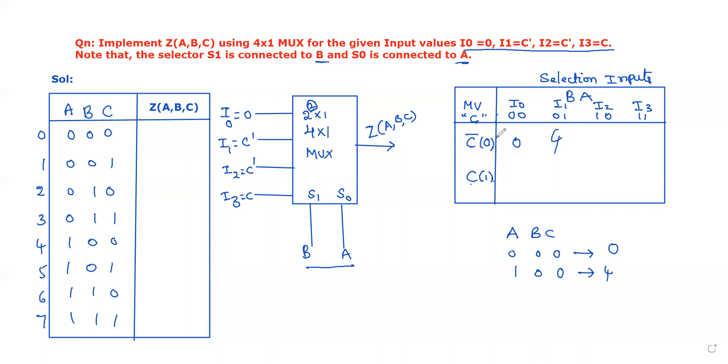Similarly, for I2, C is 0, A is 0, B is 1, so its equivalent value is 2. Similarly, for I3, at the I3 level, we can find the minterm number: C is 0, and these are 1, 1, so its value is 6.